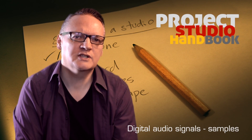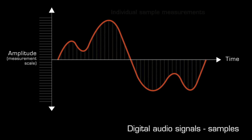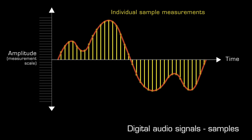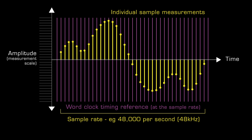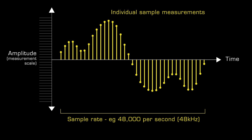Digital audio signals consist of long sequences of individually discrete measurements of amplitude, called samples. These samples are taken at very precise intervals. They are like super-precise join-the-dot pictures. The number of samples per second is expressed as the signal's sample rate or frequency. For example, there are 48,000 samples of amplitude per second in a 48 kHz digital audio signal.